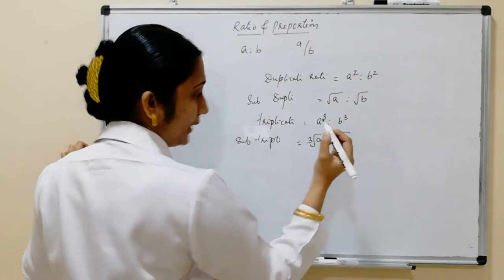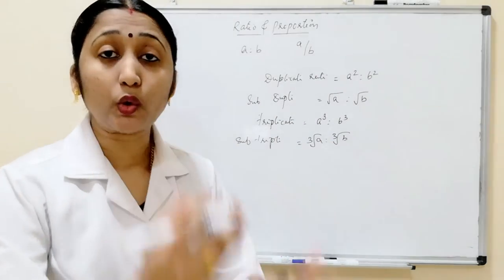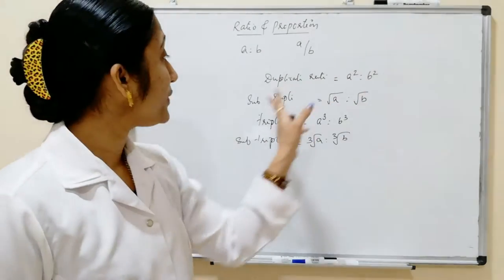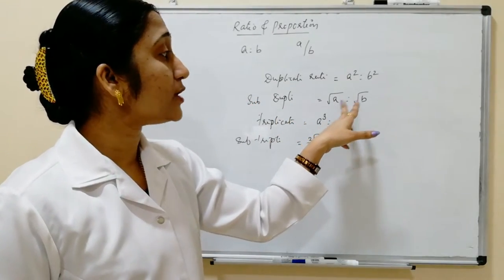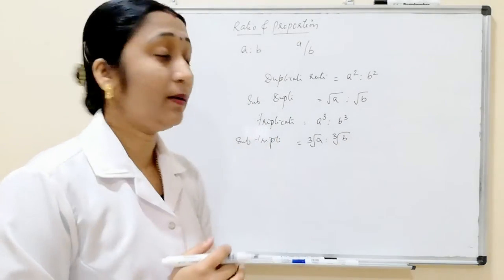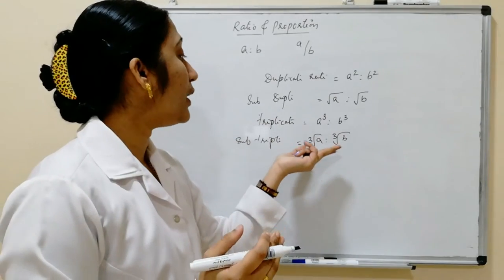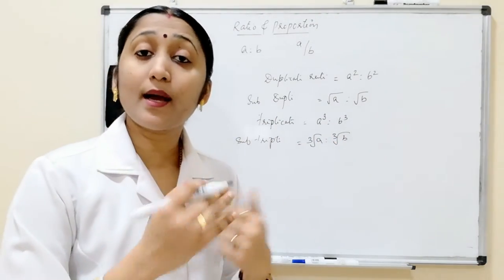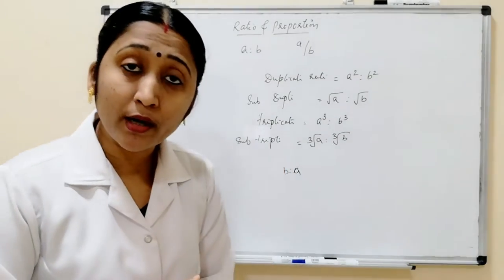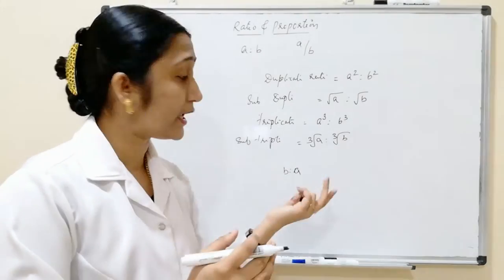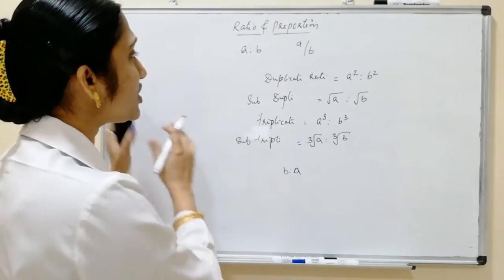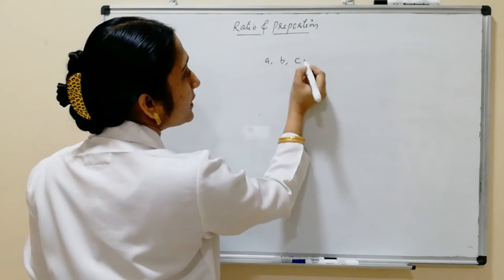So to summarize: if A and B are two quantities in ratio — duplicate ratio is A² to B², sub-duplicate is √A to √B, triplicate is A³ to B³, sub-triplicate is ∛A to ∛B, and inverse ratio is B to A. If any non-zero number multiplies or divides the ratio, it remains the same.